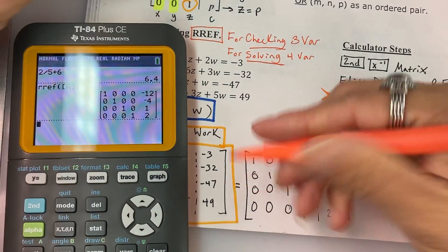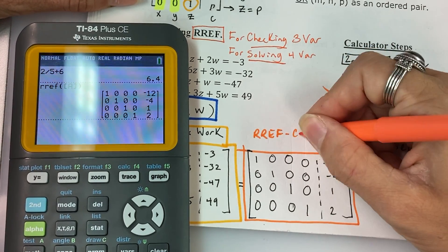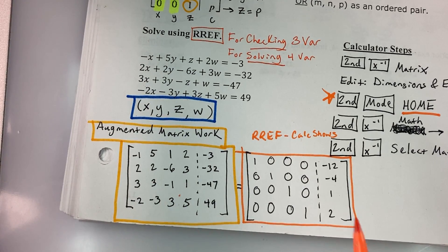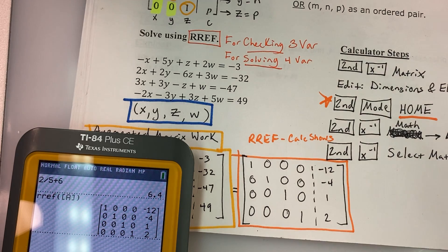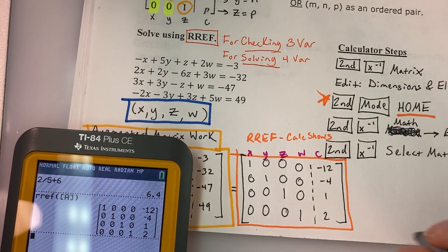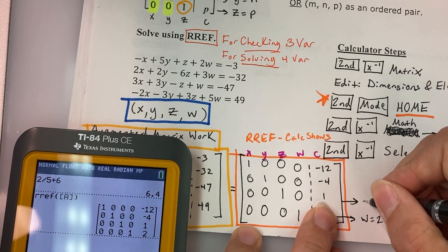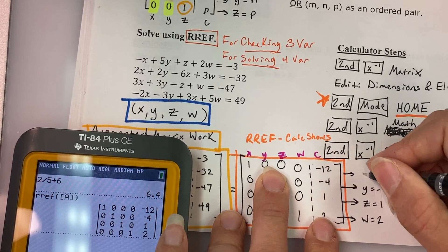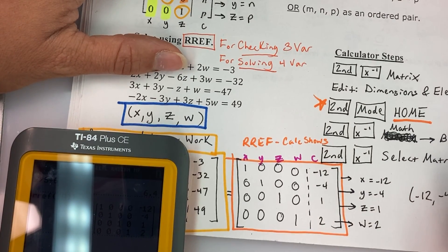All right folks. So this is the reduced row echelon form that your calculator shows. So I want you to show your augmented matrix on your paper, what your calculator has shown as the reduced row echelon form, and now we can use this to write our solutions. Going back to what we have done previously, each column represents a variable, and remember W comes after Z, so strange I know, and now we can turn each of these rows into a solution. So this says W equals two, this one says Z equals one, this one says Y equals negative four, and this one says X equals negative 12. So as a coordinate, our final solution would be negative 12, negative four, one, and two.